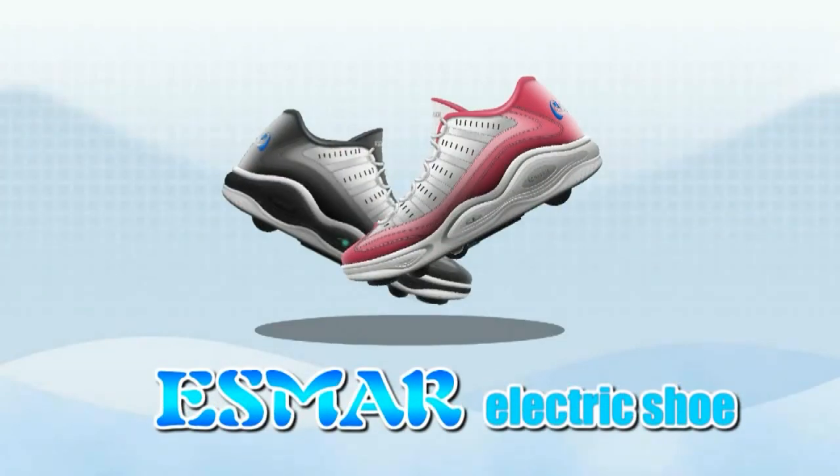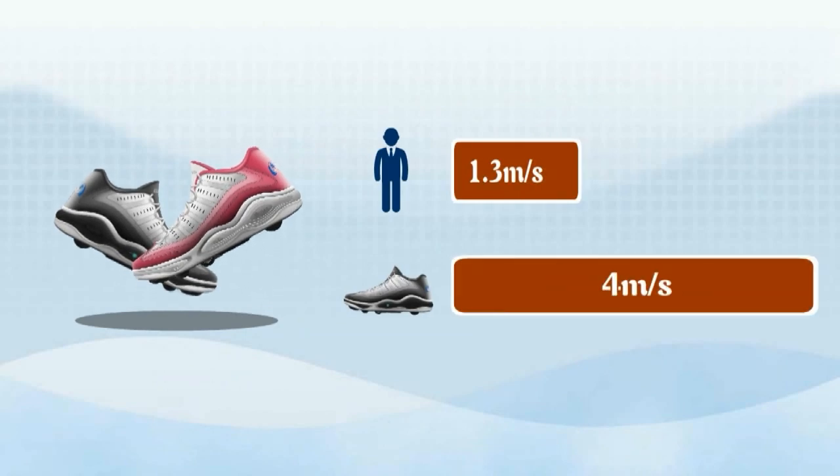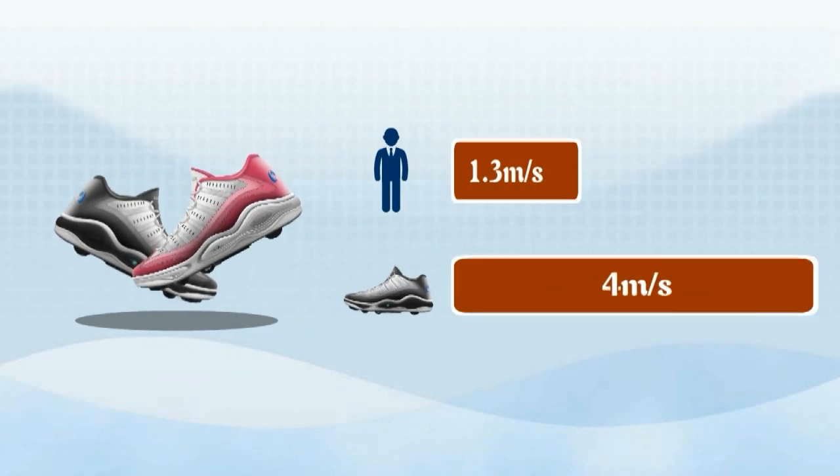Esmar electric shoe is a kind of magic shoe with special additive property. Proper application of it can make the user own a speed which is three times that of walking.